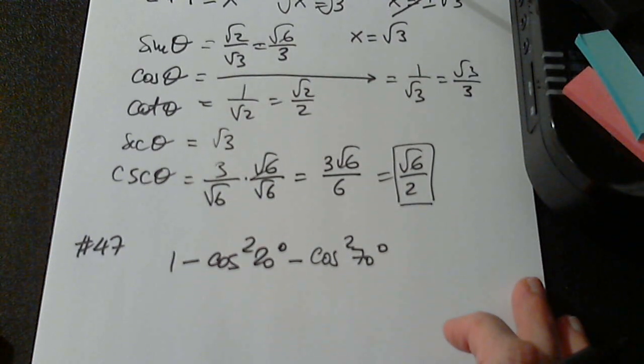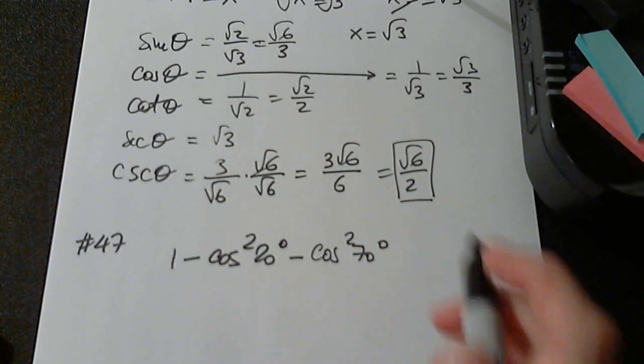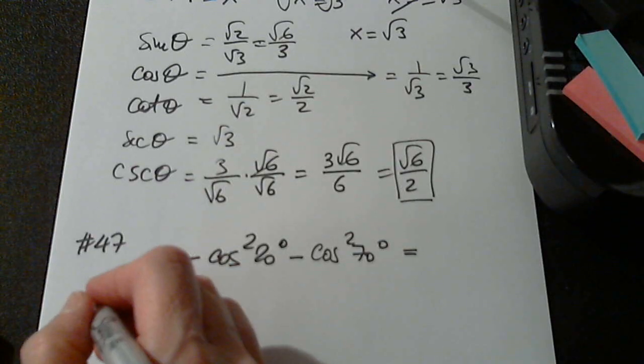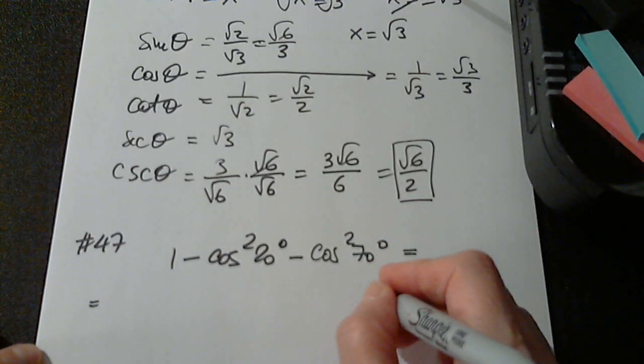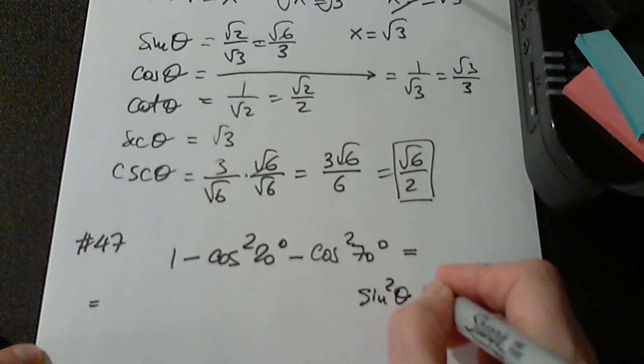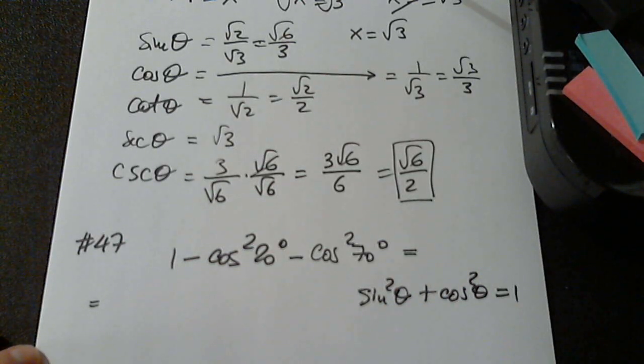Try to simplify this as much as possible. So what I should have in mind, in the back of my mind, I should have definitely this: sine squared theta plus cosine squared theta equals 1.